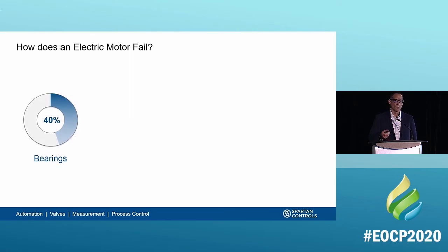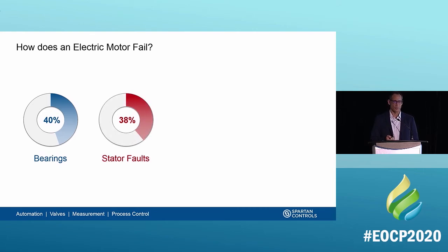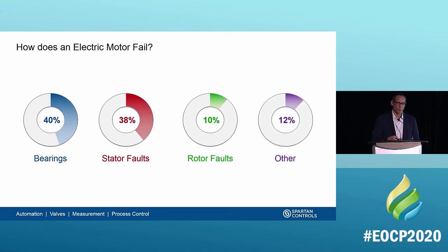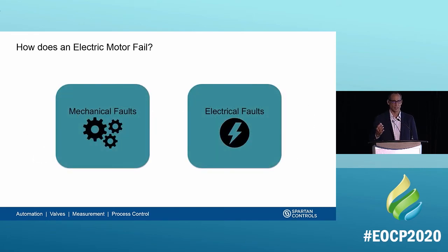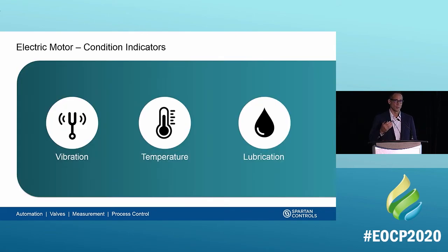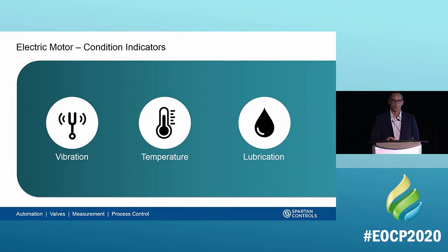How can a motor fail? Statistics show that about 40% of electric motor failures are due to bearings, which maintain the rotor on its axis as it spins. About 38% are stator faults, 10% are rotor faults, and about 12% are other causes. We can group these fault conditions into two categories: mechanical faults and electrical faults. The key indicators of these fault conditions include vibration, temperature, and lubrication. We're going to focus on vibration specifically since there isn't time today to cover the other two.